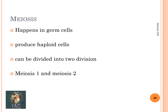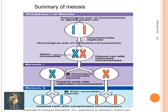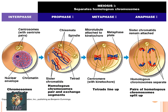Next is meiosis. Meiosis happens in the germ cells and produces haploid chromosomes. It can be divided into two phases: meiosis one and meiosis two. In meiosis one, the homologous pair of chromosomes in the diploid parent pair up, forming tetrads. These then separate, after which meiosis two starts, and cells with the haploid number of chromosomes are formed.